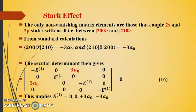And from the standard calculation, these terms are to be equal to minus 3a_0, both of them. So the secular determinant which is responsible for giving the eigenvalues can be expressed like this. All other terms are 0 except the red one, that is minus 3a_0, minus 3a_0.